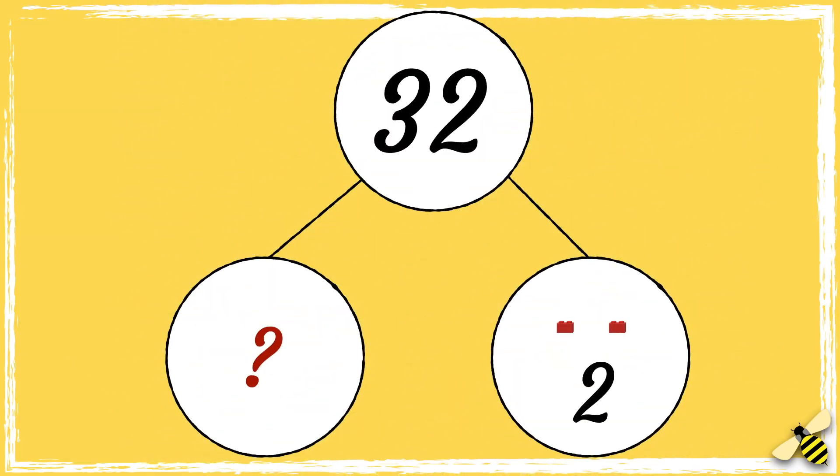How many tens are in the number 32? Pause the video to give you time to work out the answer. Press play when you're done. 32 has three tens. Ten, twenty, thirty.